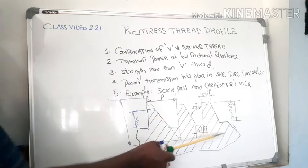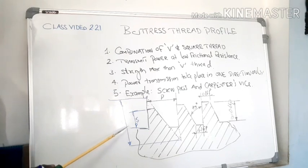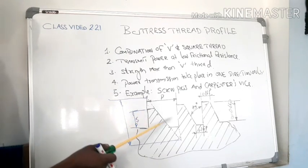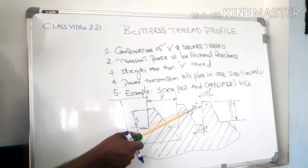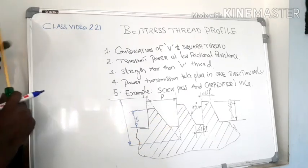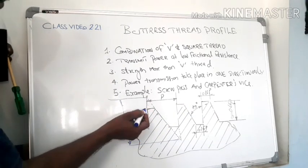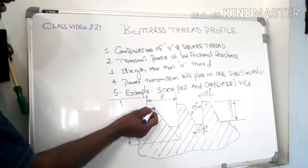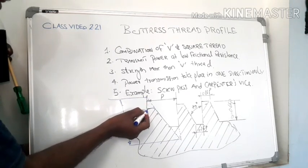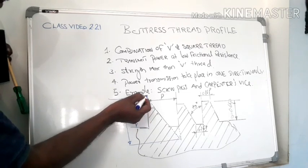Here, this figure shows the shape of buttress thread and the parameters are marked here. At the top surface there is a conical cut of section. If it is extended, this line upward direction, we have to get a conical cut of section.